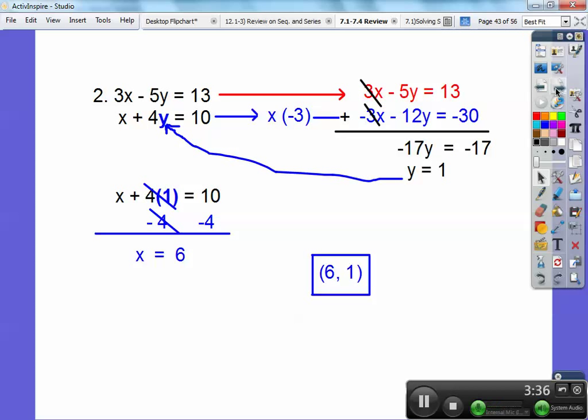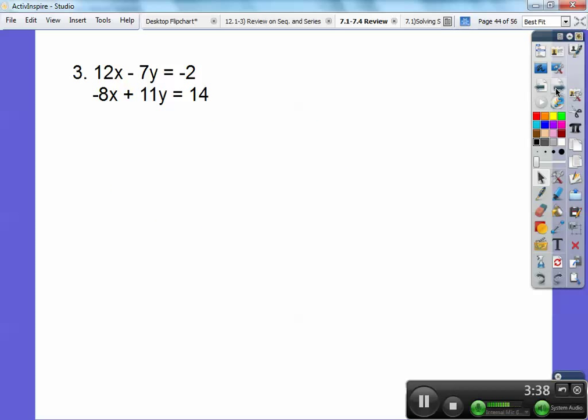Okay, this one here. All right, so now this one's not so easy. I've got to change both equations. I can make both of these a common multiple of 12 and 8 is 24. Common multiple of these guys is 77. I'm going to choose the 24.